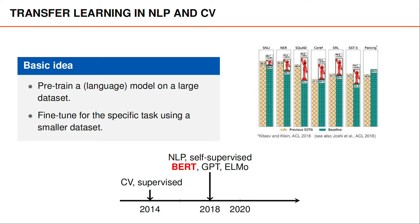Interestingly, the pre-training strategies used in natural language processing are self-supervised, which means that they do not require us to annotate the data. The most common type of self-supervision in NLP is to predict the next word in the sequence. In that case, you feed the first n-1 words into the network and ask the network to predict the nth word in the sequence. The fact that we do not need to annotate the data is a huge advantage and enables us to crawl the internet and collect gigantic datasets that we can use to pre-train our models.